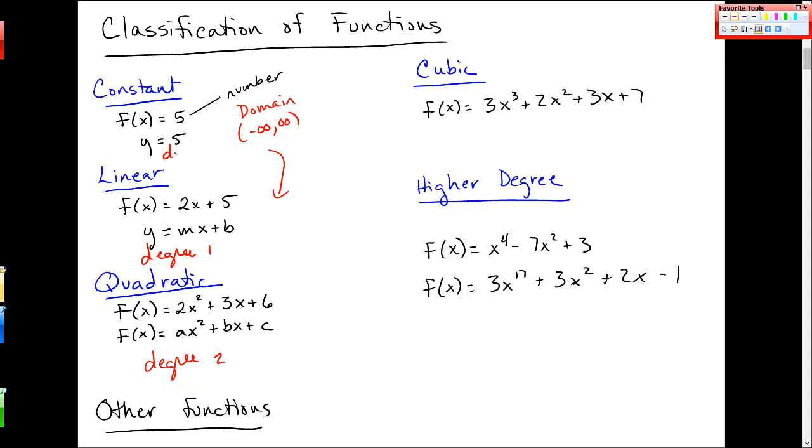Quadratic functions are polynomials of degree 2. Linear functions have degree 1. And constant functions have degree 0. So quadratic functions look like this. You'll probably remember the ax squared plus bx plus c. And we use that. That's the same a, b, and c as in the quadratic formula.